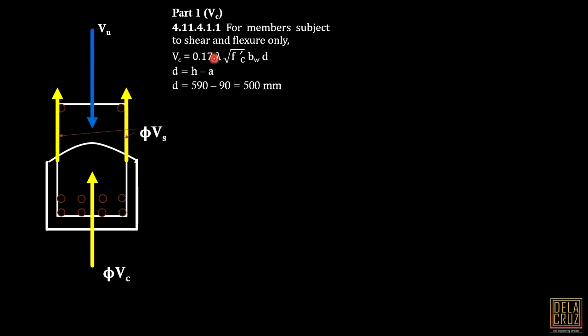Now, this lambda factor is commonly taken as 1.0 for normal weight of concrete. There's a provision for that, but commonly it's 1.0. If not specified, automatic 1.0. Substituting all the values, the answer must be 132.5 kilonewtons. Take note, the result is in newtons, so I converted it.